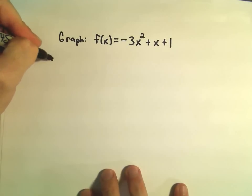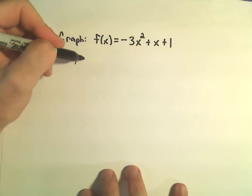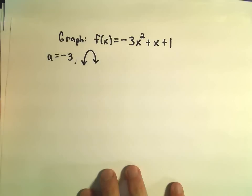One thing I notice here is a is going to be the value negative 3. Again, that's the coefficient on the x squared. And that to me just tells me that the parabola is going to open downward. So I already know that.